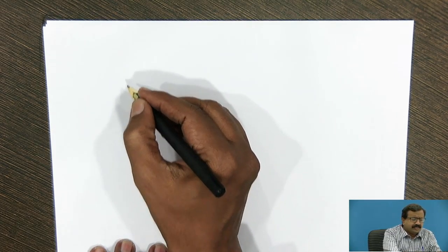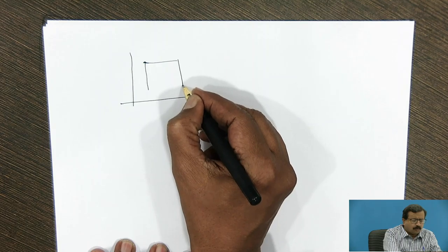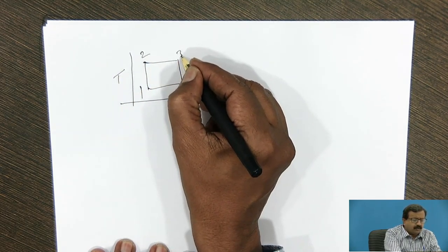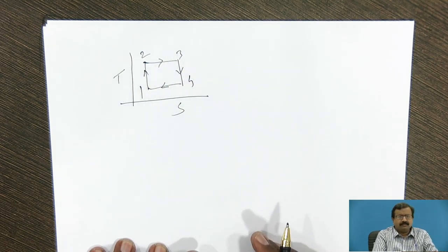In the last session, we have seen that Carnot proposed the cycle which consisted of two isothermals and two isentropes. So on the TS diagram, we have shown that 1, 2, 3, 4.